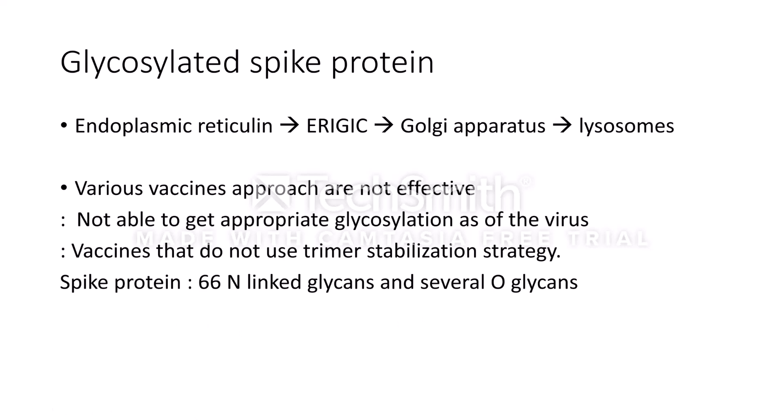The vaccine studies are not in full correlation with — or as effective against — the actual virus. Vaccines that do not use a trimer stabilization strategy are affected by trimer instability, which also significantly affects glycosylation formation. Because of this, the targets for which vaccines are developed may not work as effectively in practice as they did during laboratory studies.